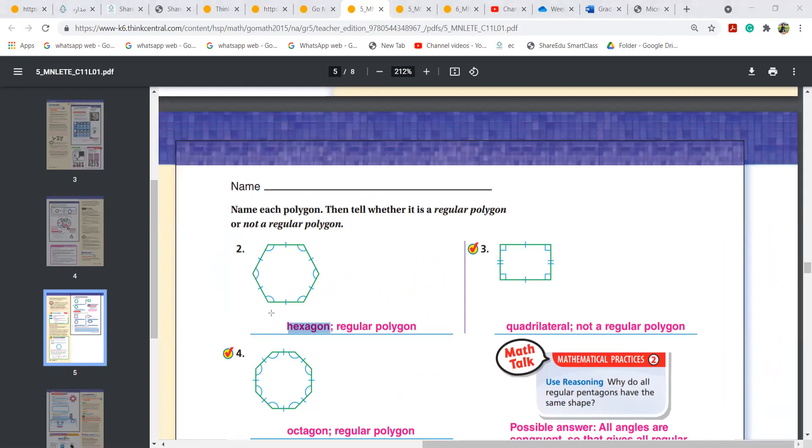Yes, Tina, see, hexa means six. Hexa means six. If you six, if you count here, if you count here, one, one, two, three, four, five, six. Six means hexa. Hexagon.